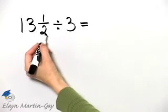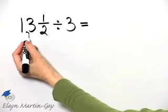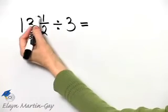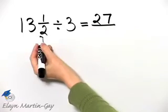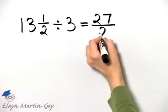Remember how we do that? Two times thirteen is twenty-six, plus one is twenty-seven over the original denominator of two.